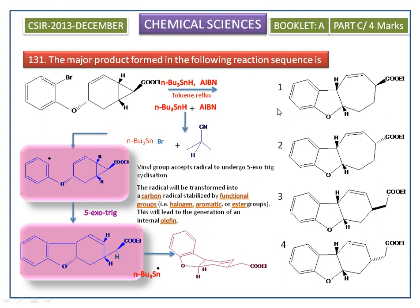Among the options, the first and second options are not the correct answer. The correct answer is either option 3 or option 4. We need to check whether the product has a cis or trans conformation.